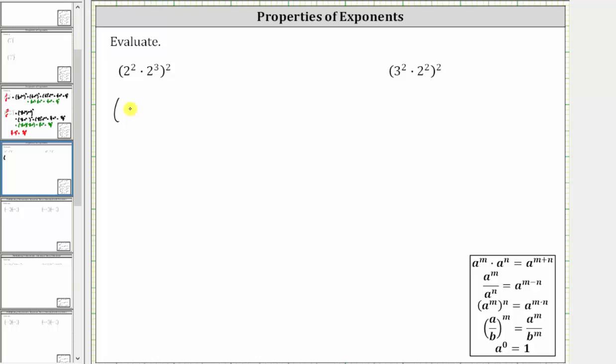Two squared is equal to two times two, which is four. Two cubed is equal to two times two times two, which is eight.